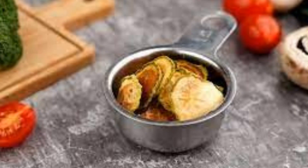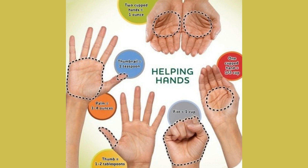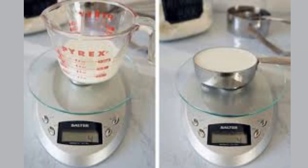When a recipe calls for vegetables in cups, you might be confused trying to figure out how much you need to add. Using a measuring cup to find the right amount of veggies isn't too difficult. If you don't have a measuring cup or are in a hurry, choose a portion that's about the size of your fist or a baseball. Make a fist and compare it to the overall amount of your vegetables — if they're roughly the same size, you have about one cup.